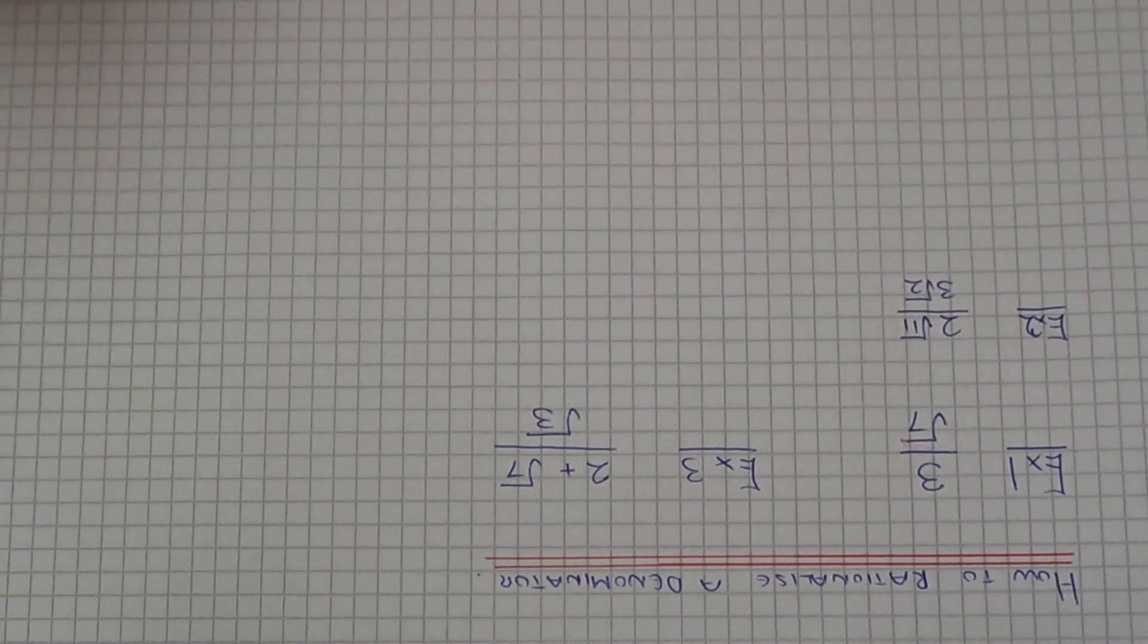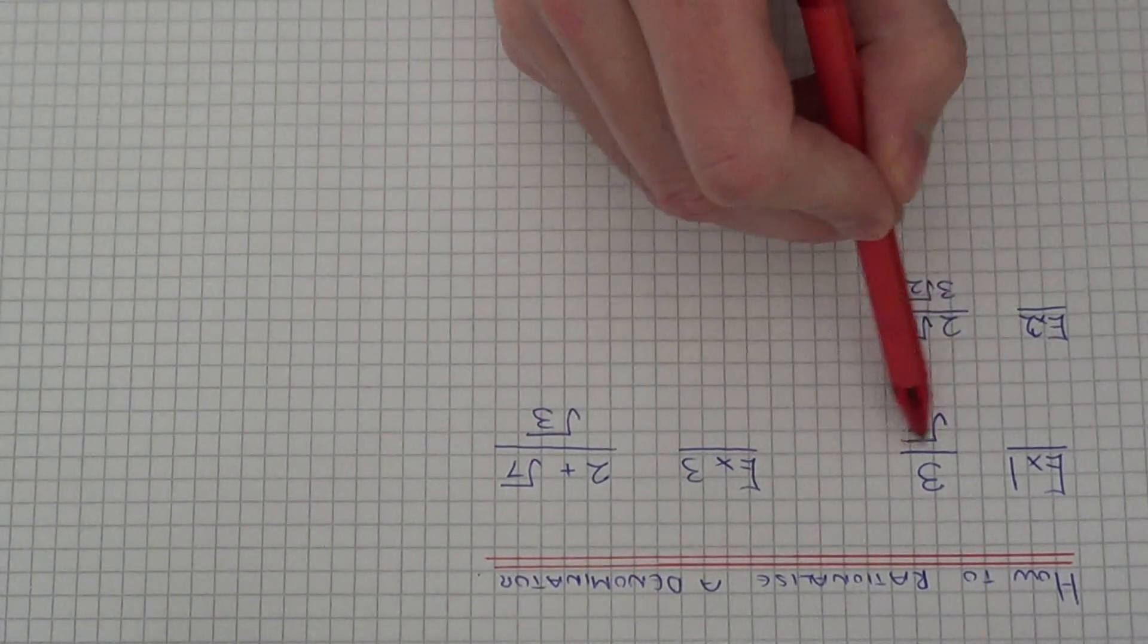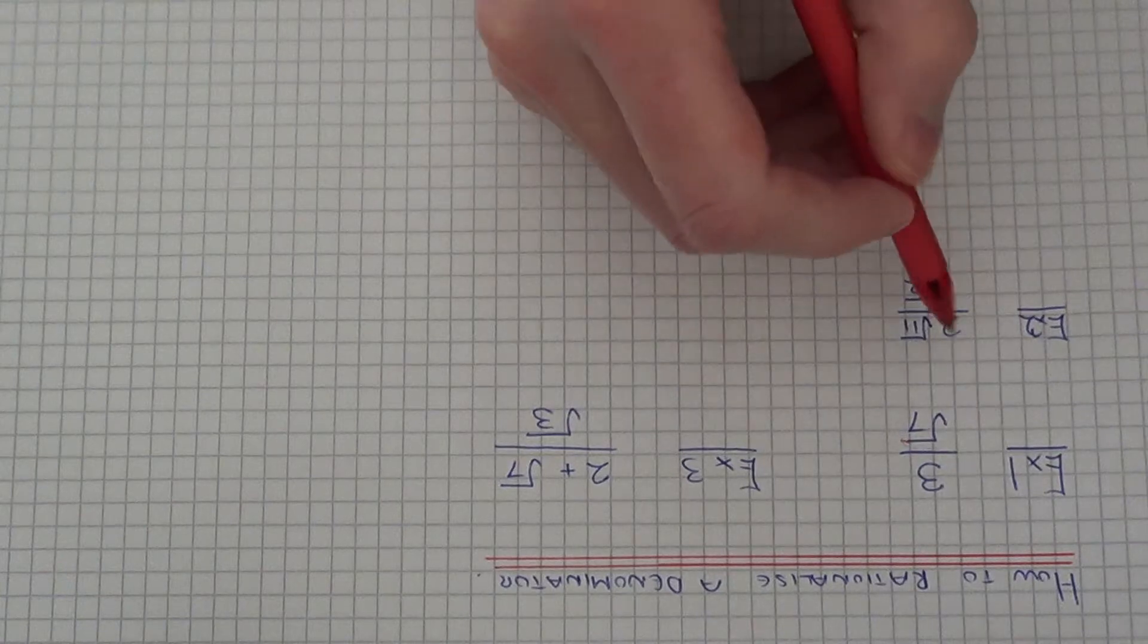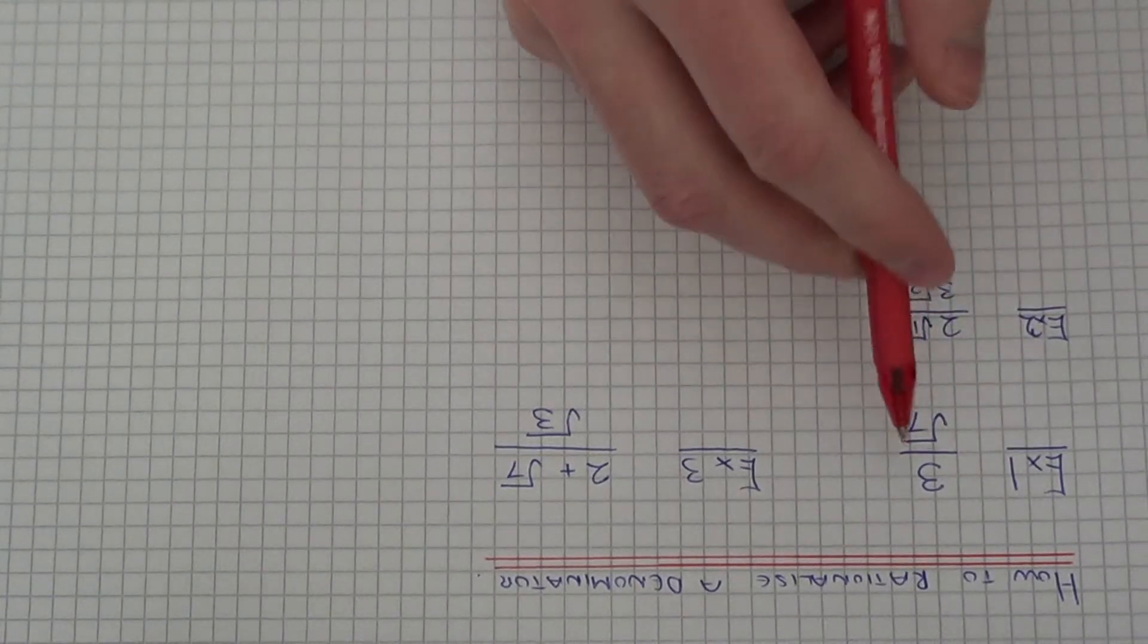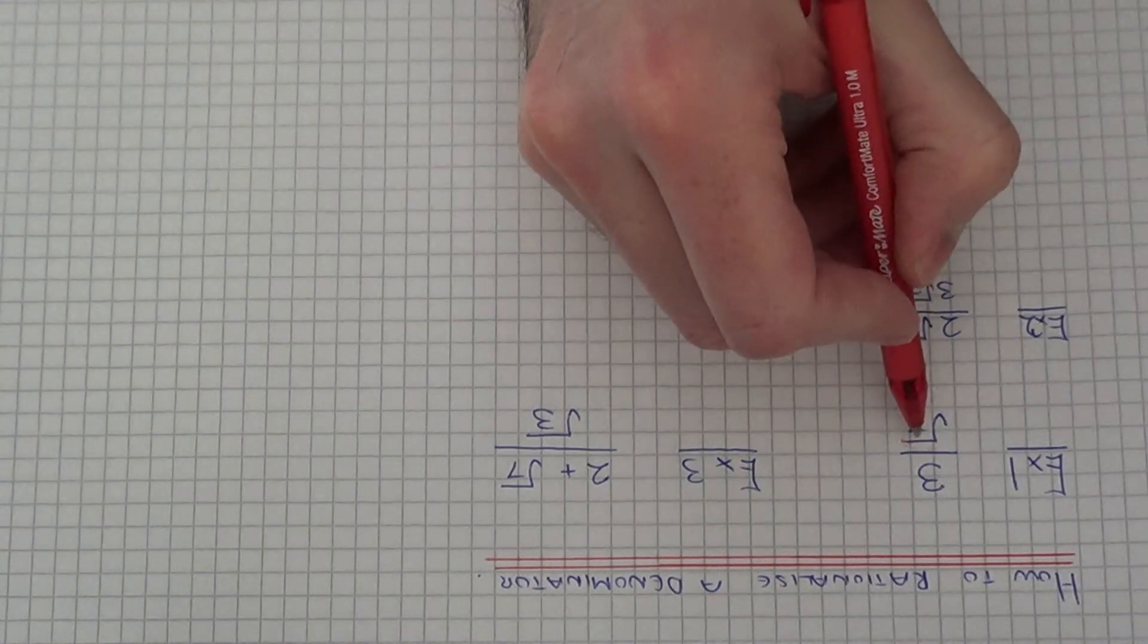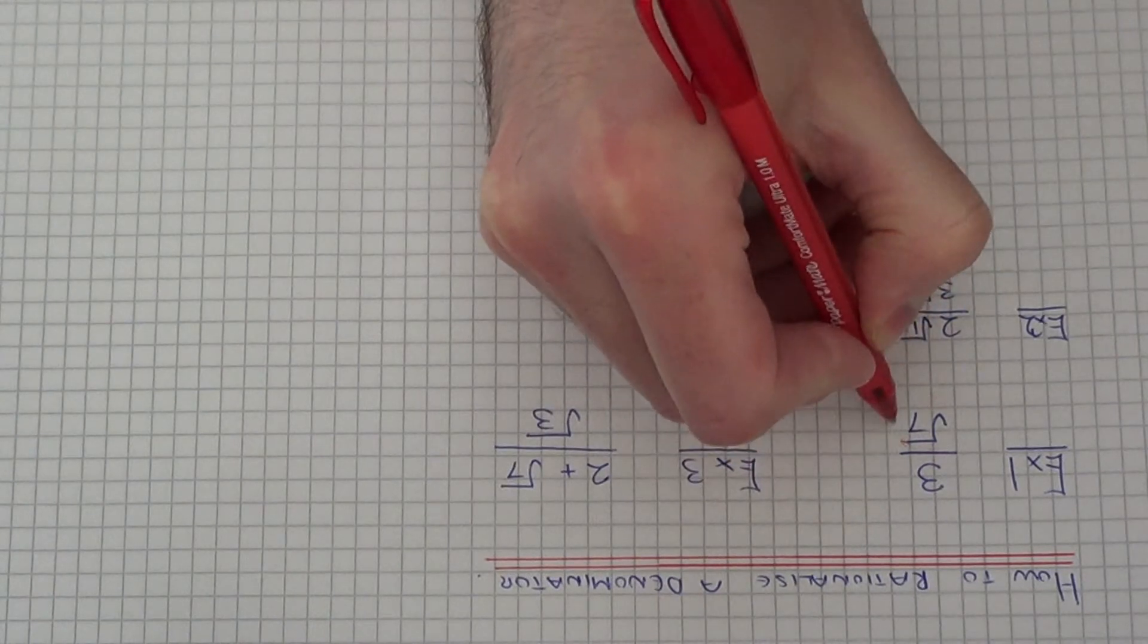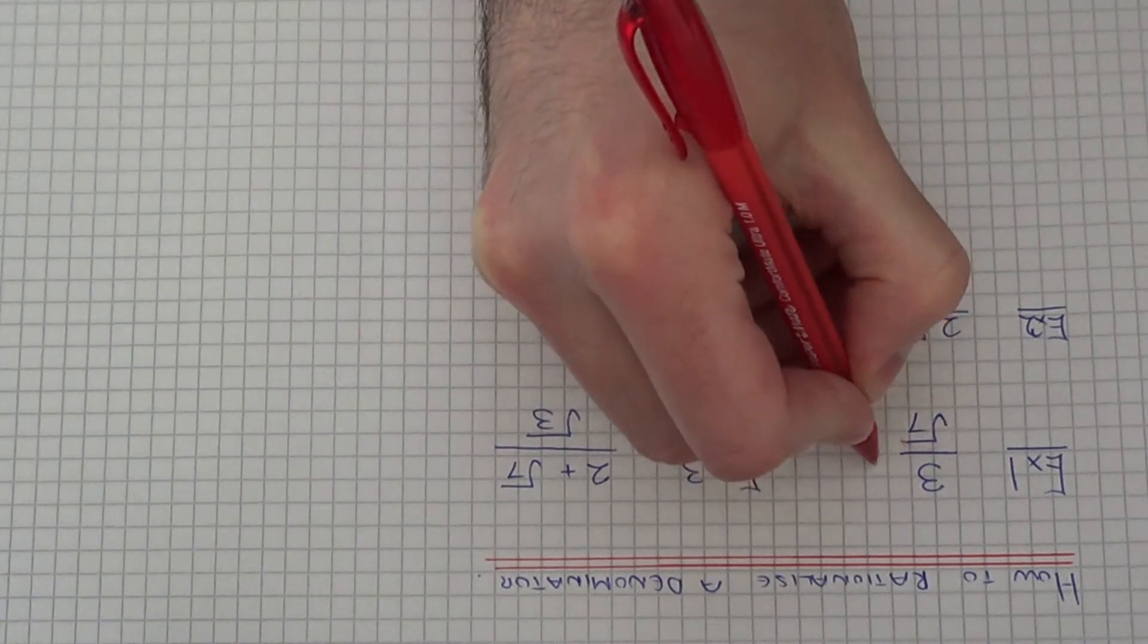And the way you do it is to multiply the numerator and denominator of the fraction by whatever surds you have on the denominator. So if we look at example 1, we need to rationalise this fraction. So the surd on the bottom is root 7. So we have to multiply the numerator and denominator by root 7.